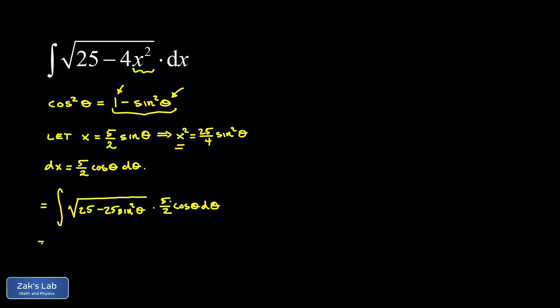Combining that 5 with the 5 halves gives a constant of 25 over 2 out in front. So we get 25 over 2 times the integral of the square root of 1 minus sine squared — that was the whole point of the substitution. The 1 minus sine squared can be replaced with cosine squared, and that's multiplied by an additional factor of cosine theta d theta.